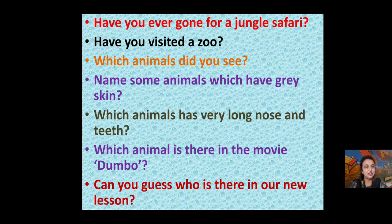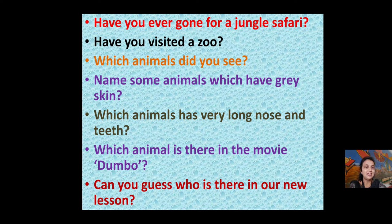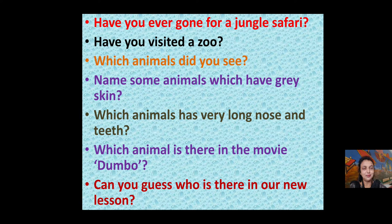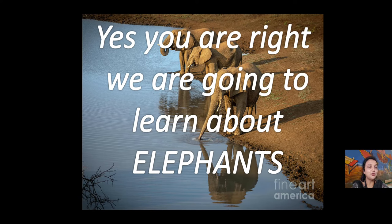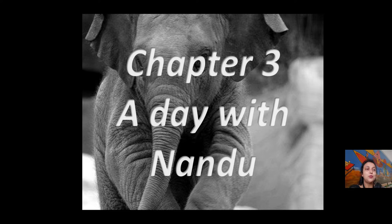Which animals did you see in the zoo? Write down the names. Which animals have grey skin? Which animals have a very long nose and teeth? Which animal is in the movie Dumbo? If you have not seen it, no problem — you can see it afterwards. Can you guess who is in our new lesson? Yes, you are right — we are going to learn about elephants.